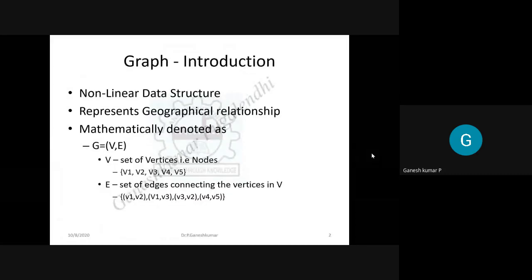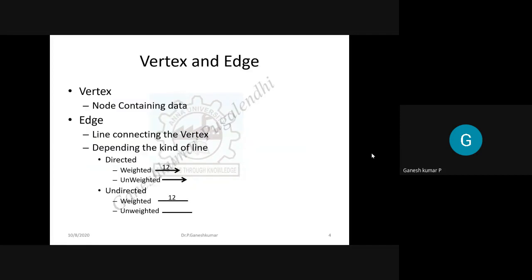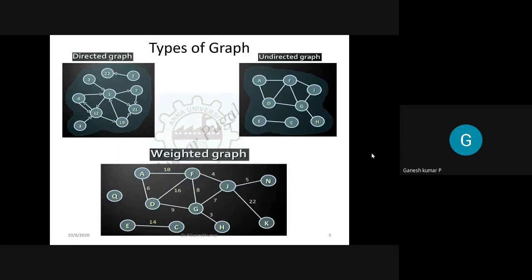What is a graph? It is said to represent geographical relationships, and it is mathematically represented as G equal to (V, E), where V is the set of vertices and E is the set of edges. Diagrammatically, V defines the nodes and E defines the connections between them. Depending on the edges, graphs are classified as directed, undirected, weighted, and unweighted, with an example for each kind.